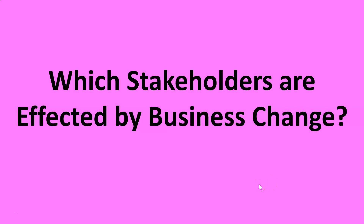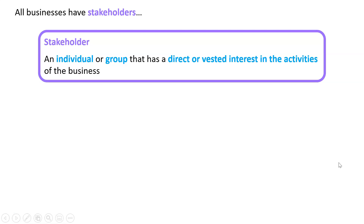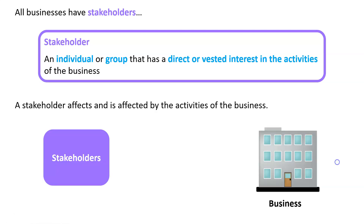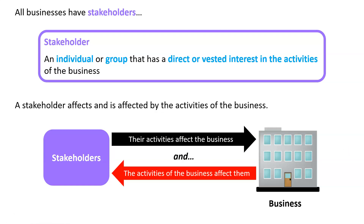This chapter is all about stakeholders being affected by change, so we need to go back in time to an earlier topic and talk about what a stakeholder is. A stakeholder is any individual or group that has a direct or vested interest in the activities of the business. If we've got a stakeholder over here and the business over here, what they do affects the business, but it also goes the other way — what the business does affects them too.